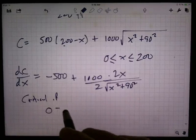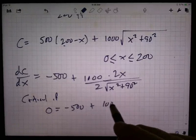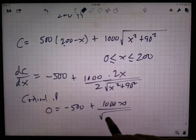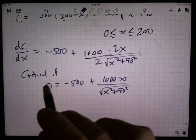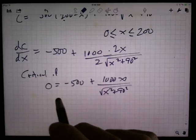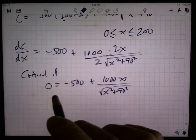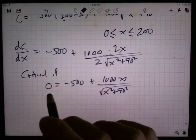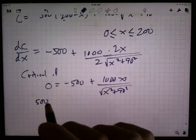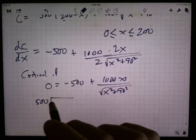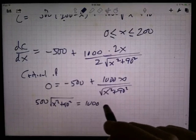Critical if 0 equals negative 500 plus 1,000 X over the square root of X squared plus 90 squared. So, I'll solve for X. I want to bring the 500 over, and bring the square root over, and this is equal to 1,000 X.